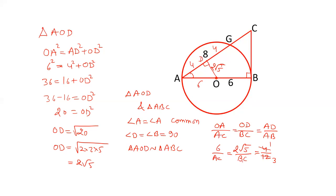So the ratio of OD to BC will also be 1:3. BC will be thrice 2√5. That is, BC = 6√5. So the length of BC is 6√5.